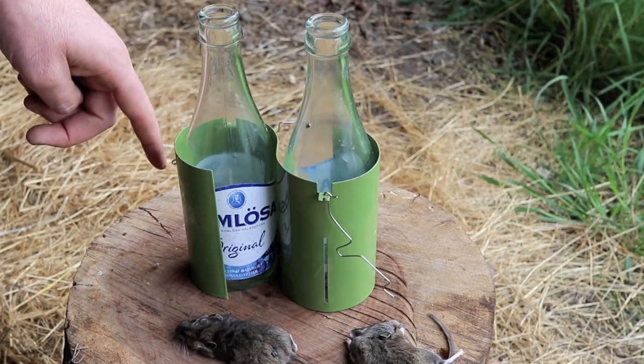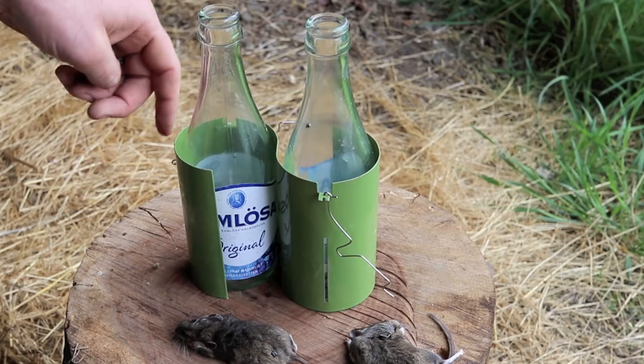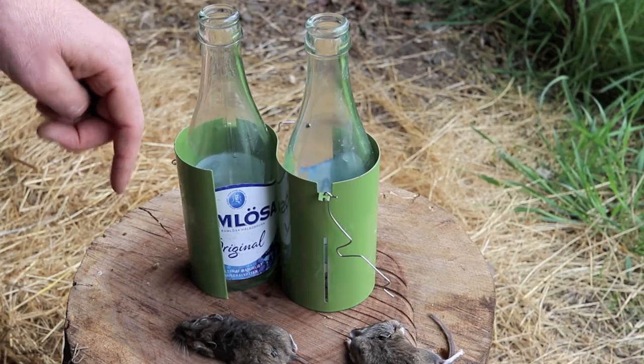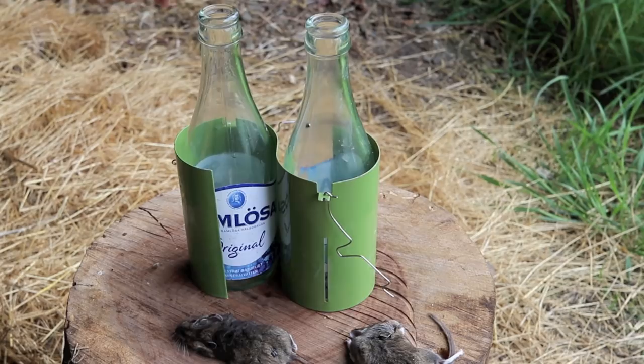Also there was a case where a mouse went in there, took the bait, flipped the trigger and was able to jump out before getting caught. Now I found that adding water in the bottles really seemed to help. It results in a quick clean kill.